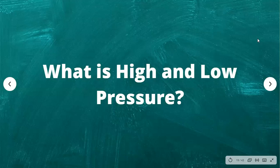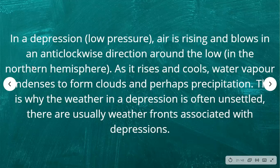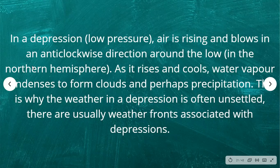In an anticyclone (high pressure), the winds tend to be light and blow in a clockwise direction in the northern hemisphere. Air is descending, which reduces cloud formation and leads to light winds and settled weather conditions. In a depression (low pressure), air is rising and blows in an anticlockwise direction. As air rises and cools, water vapor condenses to form clouds and possible precipitation, making weather in a depression often unsettled, with weather fronts usually associated.